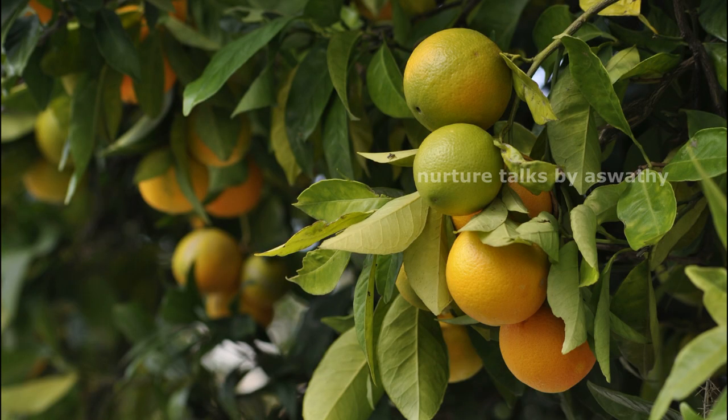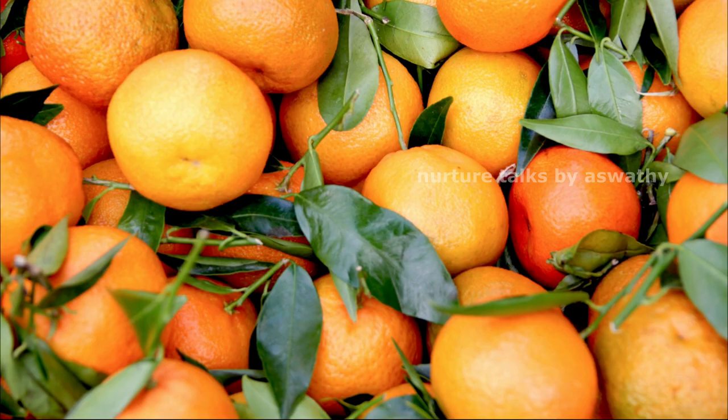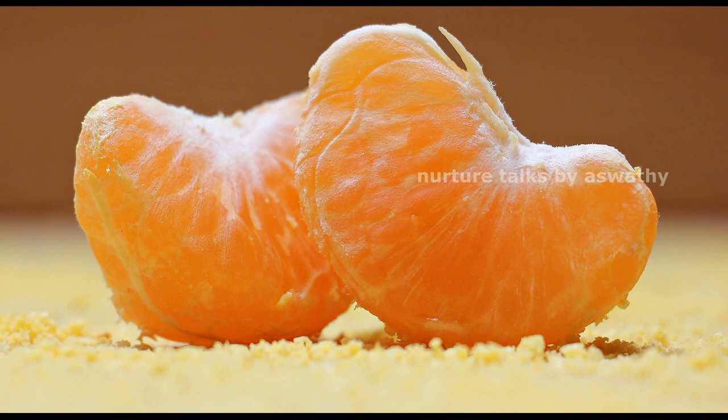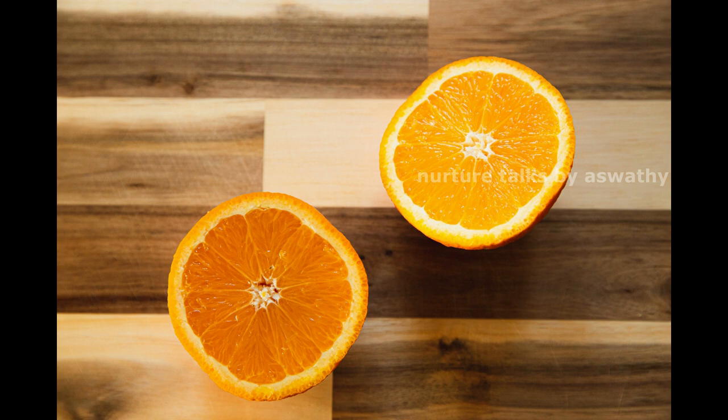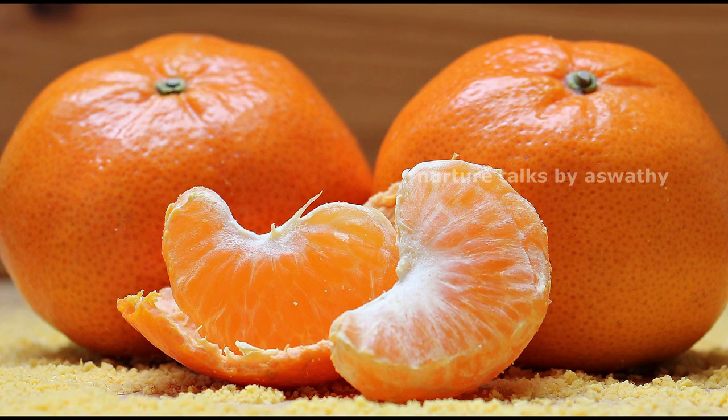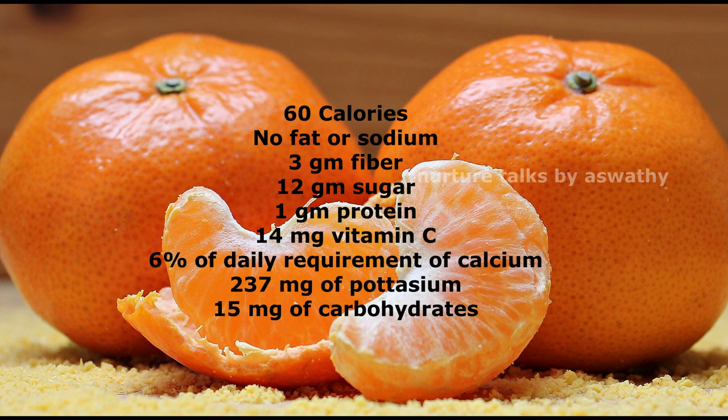This is the orange color. The medium size orange is 10.5 grams and 60 calories. The orange has no sodium, 3 grams of fiber, 12 grams of sugar, 1 gram of protein, 14 milligrams of vitamin C, 200 milligrams of potassium, and 15 milligrams of carbohydrate.